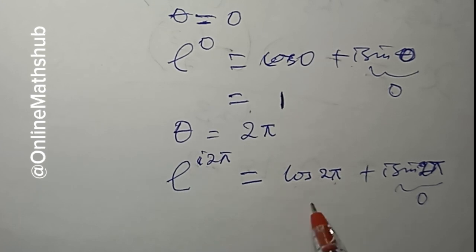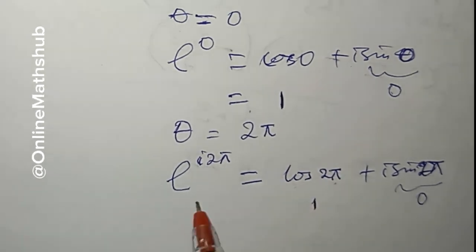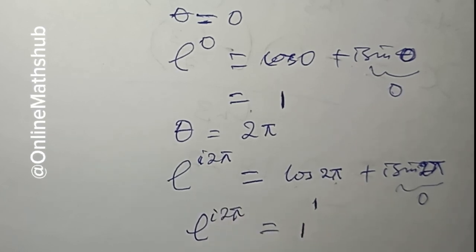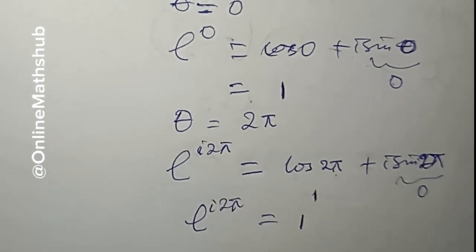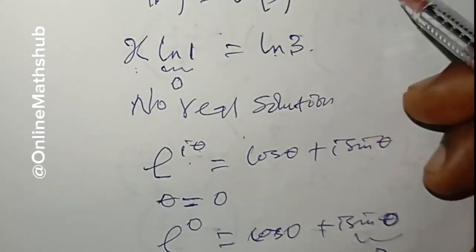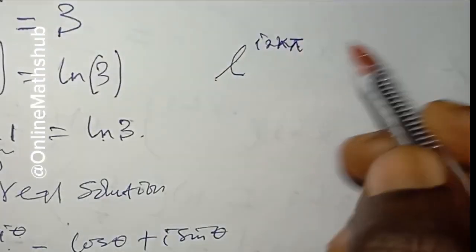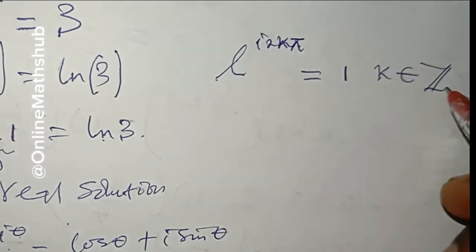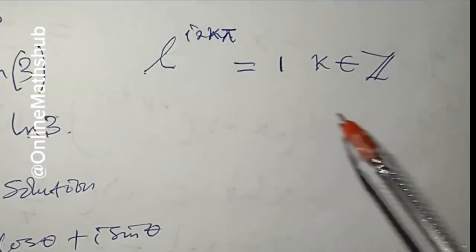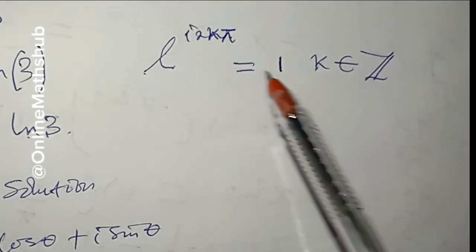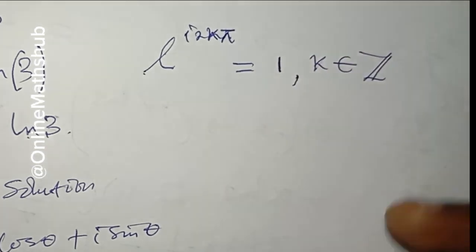Since cos(2π) = 1 and sin(2π) = 0, e^(i·2π) = 1 as well. You can continue picking these values and you will notice that e^(i·2kπ) = 1 for all integer values of k. So whenever θ changes to 2kπ where k is an integer, this polar exponential equation always gives you 1.